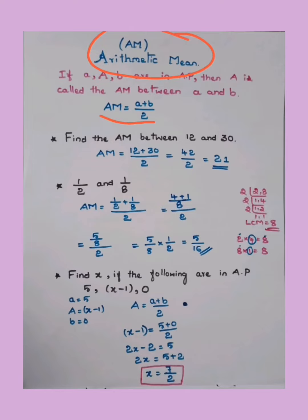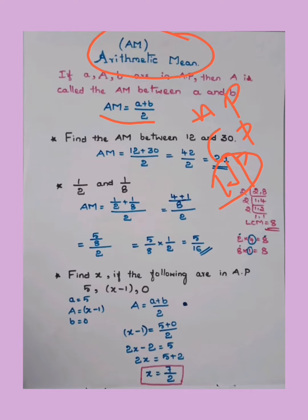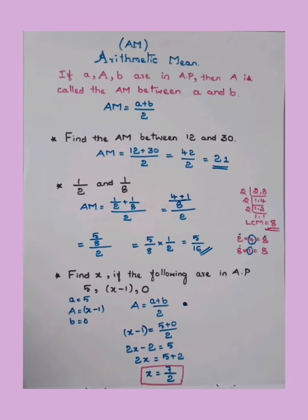Usually they give AP, GP, and HP — arithmetic progression, geometric progression, and harmonic progression. But this time they have removed HP from the syllabus, so we'll concentrate only on AP and GP. We have already handled a few classes — please check the description box for those videos. They have given AM (arithmetic mean) and GM (geometric mean) only; HM has been removed. So we'll concentrate only on these things.